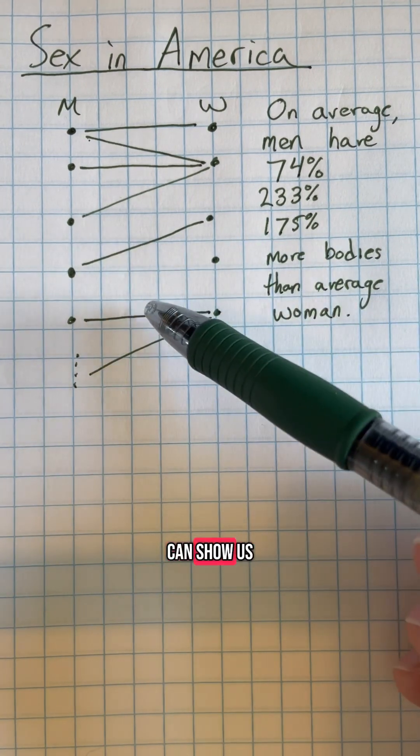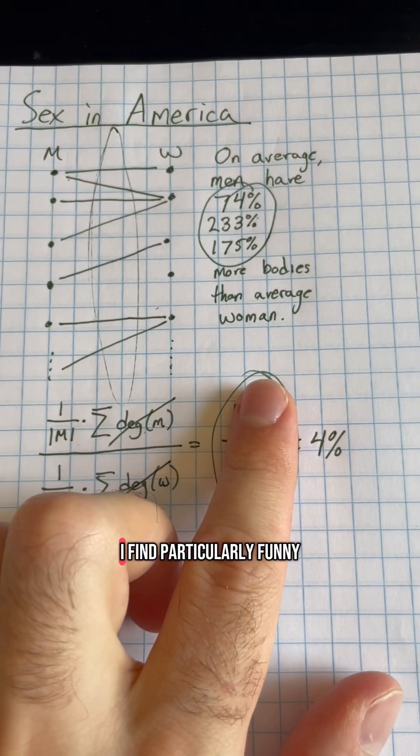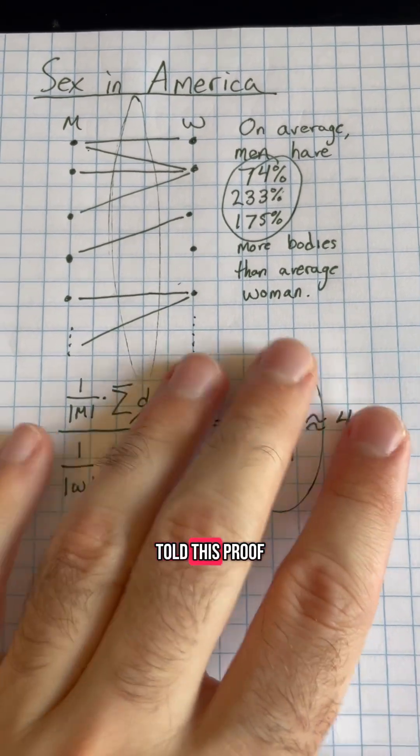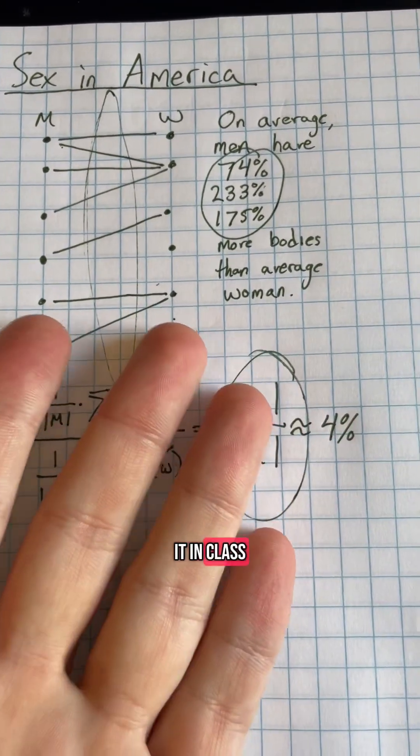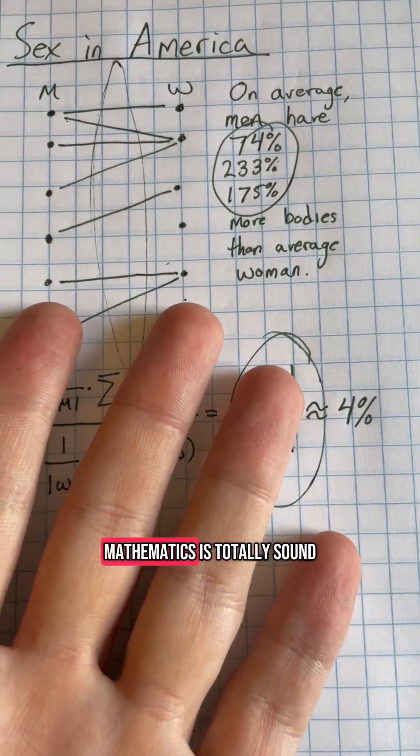Unfortunately, graph theory can show us that this data is completely bullshit. As a side story, last semester one of my students told this proof to her boyfriend after learning it in class, and he proceeded to go on a tirade listing all the reasons it's wrong, even though the mathematics is totally sound.